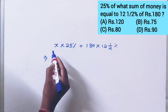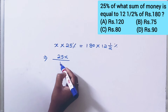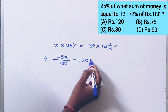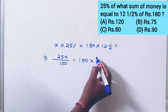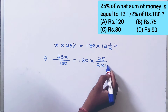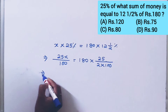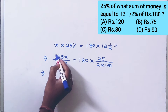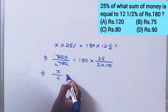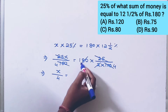Solving this: 25X by 100 — that is the percentage — is equal to 180 into 25 by 2 into 100. Simplifying, 25 gets cancelled by 4, so X by 4 is equal to 90 divided by 2, which gives 45.